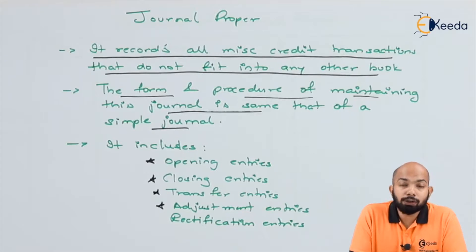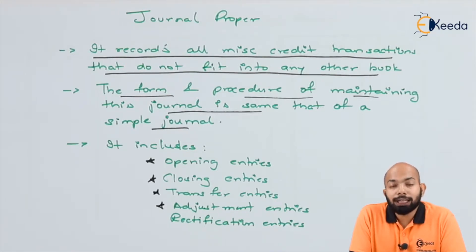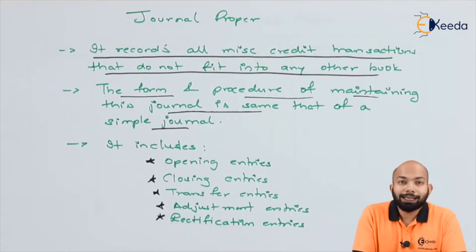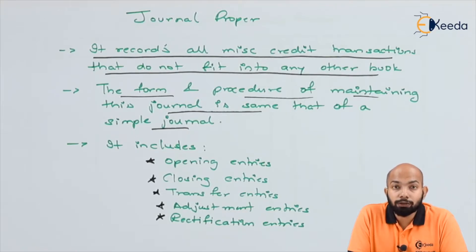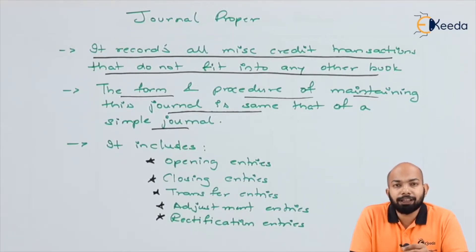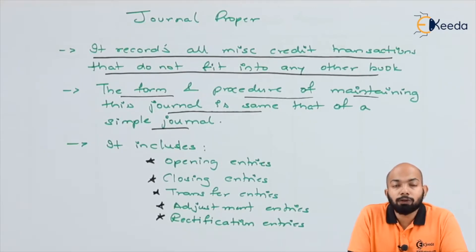Adjustment entries are also a part of journal proper. If you remember, there are certain adjustments done in the final accounts — similar to that, when adjustment entries are recorded as part of journal transactions, they form part of journal proper itself. The last part is rectification entries — any rectification of errors in such transactions is also a part of journal proper. So the basic categories are: opening, closing, transfer, adjustment, and rectification entries.